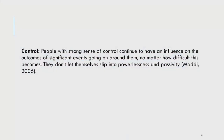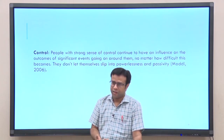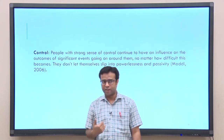Sense of control is about your ability or tendency to influence the outcome of significant events, even when it seems very difficult. People with strong sense of control continue to have an influence on the outcomes of significant events going on around them, no matter how difficult things become. This is basically internal locus of control. They do not let themselves slip into powerlessness and passivity — they try to make influence or change outcomes as much as possible.